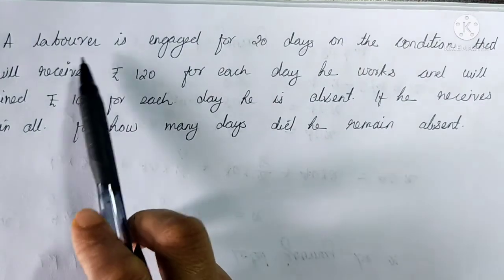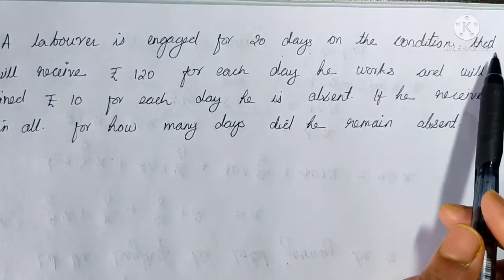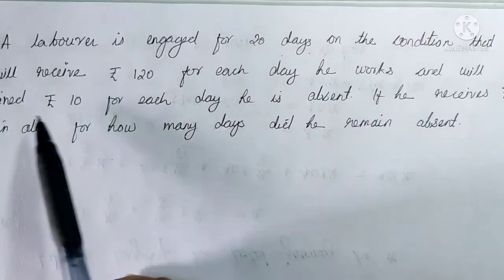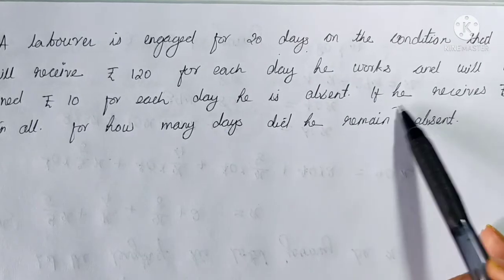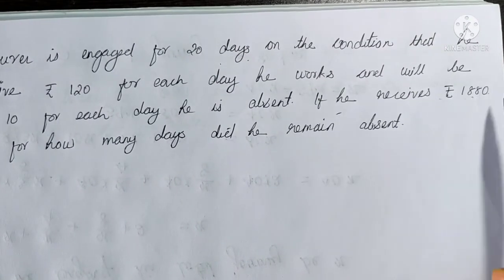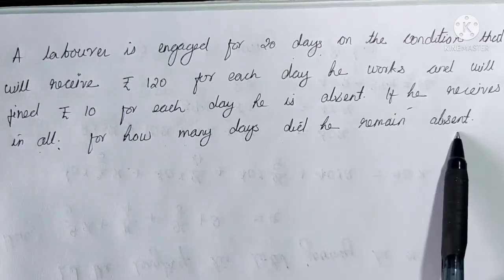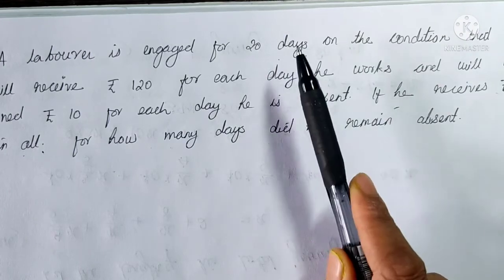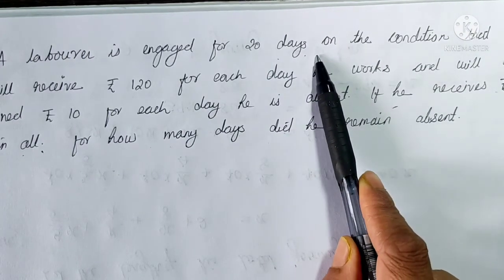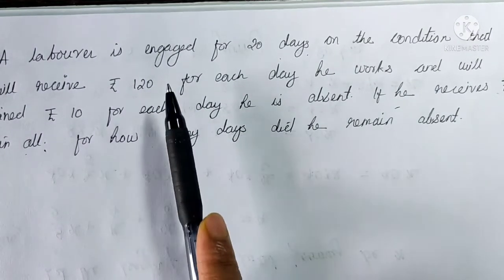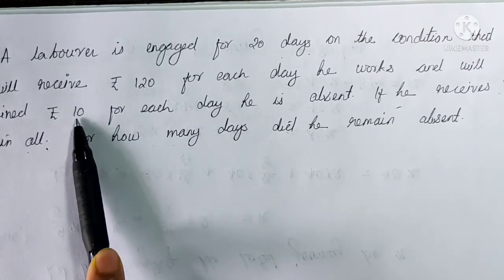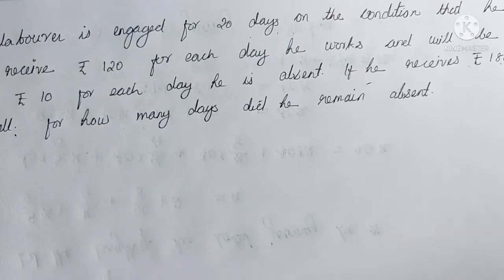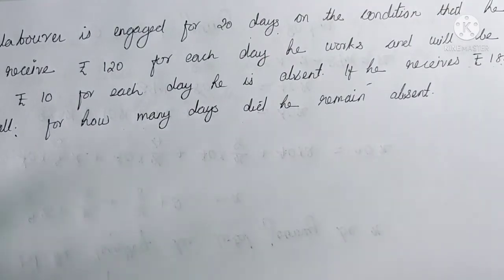Question number 33. A laborer is engaged for 20 days on the condition that he will receive Rs. 120 for each day he works, and he will be fined Rs. 10 for each day he is absent. If he receives Rs. 1880 in all, for how many days did he remain absent? A laborer is ready to work for 20 days. If he is present he receives Rs. 120; if he is absent he is fined Rs. 10. We need to find how many days he was absent.